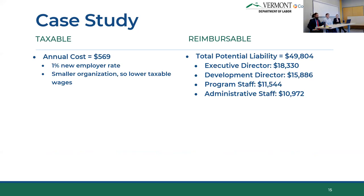In your first year at the 1% new employer rate, your annual taxable cost for the staff would be $569 — pretty small for a small organization. But looking at the reimbursable side, you could potentially be liable for $49,000. Of course, it's highly unlikely that all of your staff will leave in one year, but you still need to be aware of that and know you may have to come up with that amount, which as a small organization could be very challenging. The amounts listed next to each staff member represent the maximum you would pay for each, assuming full benefits paid.